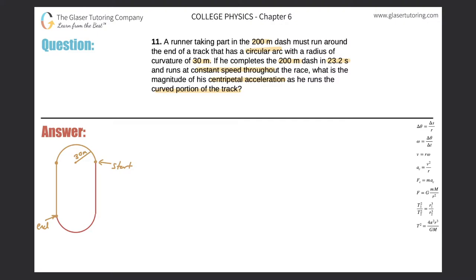Alright, so in a problem like this, the strategy I like to employ is I'd like to begin with the question. So the question is, what is the magnitude of his centripetal acceleration? Once I identify that they're asking me for this variable in physics, I now start to think about equations that have this variable in it.